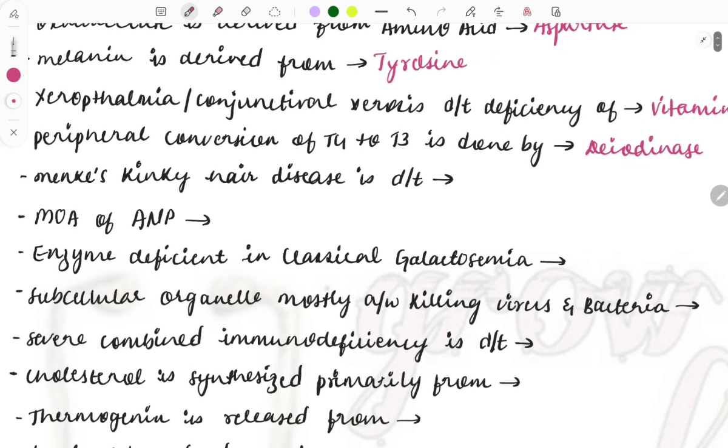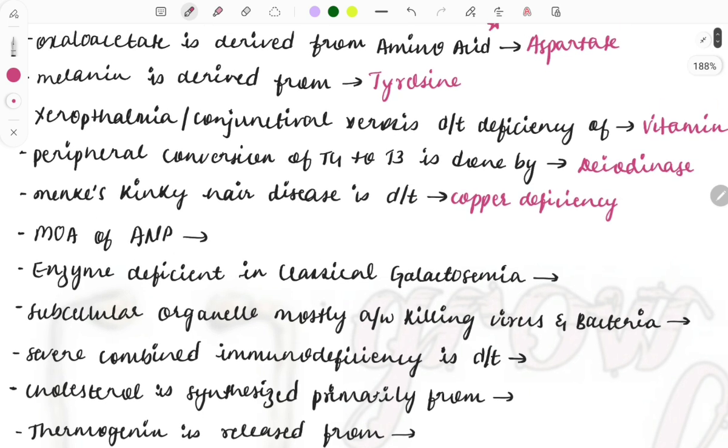Menkes kinky hair disease is due to deficiency of which mineral? It occurs due to copper deficiency. Again note it down, micronutrient deficiencies like zinc deficiency causing acrodermatitis enteropathica, copper deficiency causing Menkes disease, excessive copper causing Wilson's disease. This one is also important.